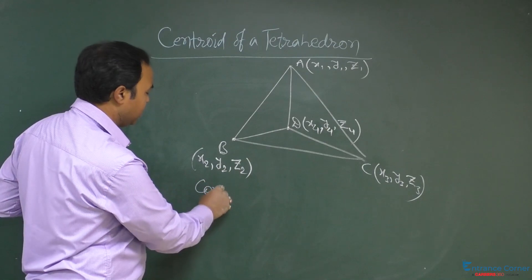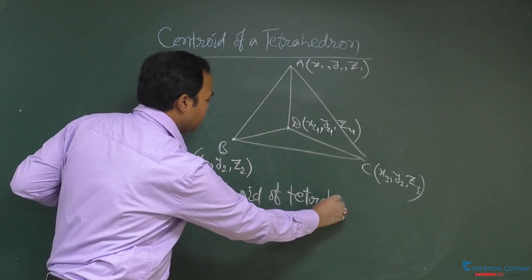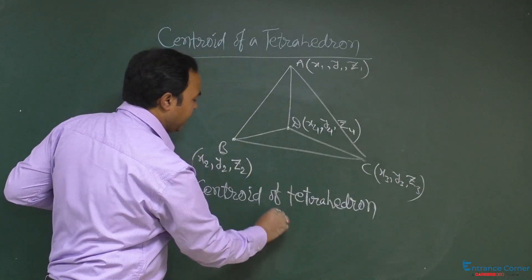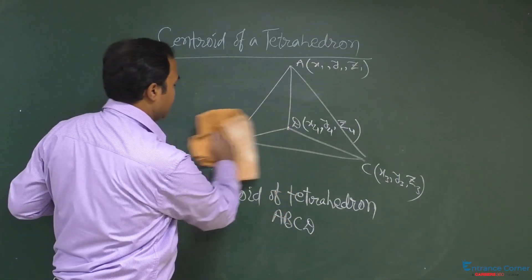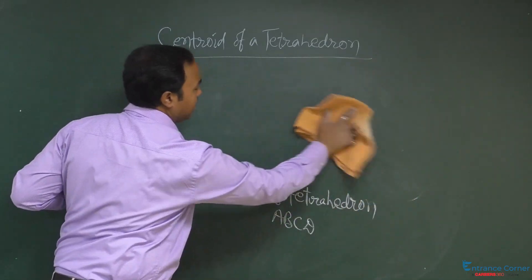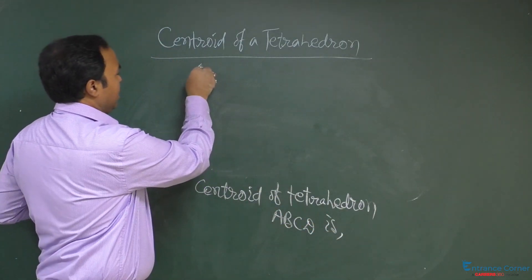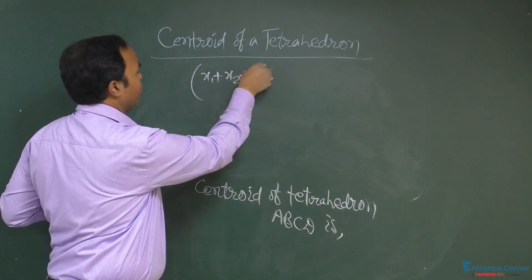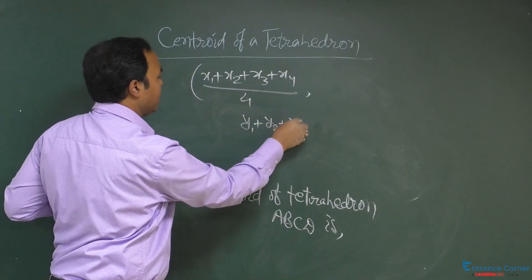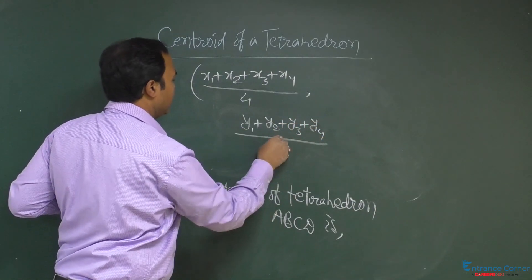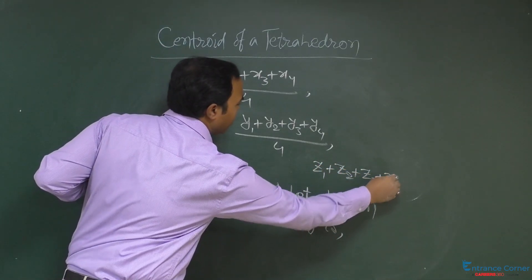Centroid of tetrahedron A, B, C, D: This centroid coordinate is ((x1 + x2 + x3 + x4)/4, (y1 + y2 + y3 + y4)/4, (z1 + z2 + z3 + z4)/4).